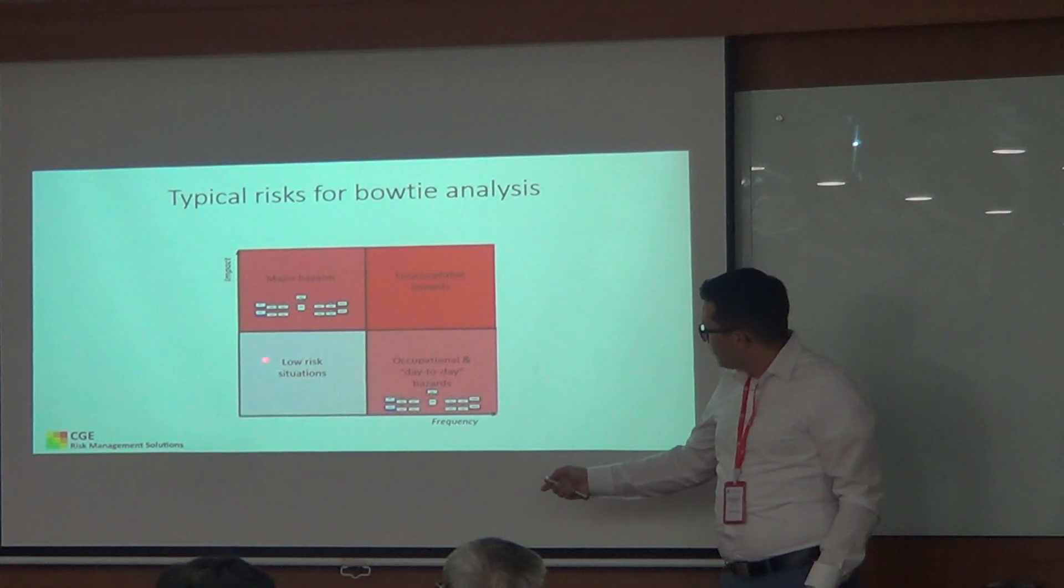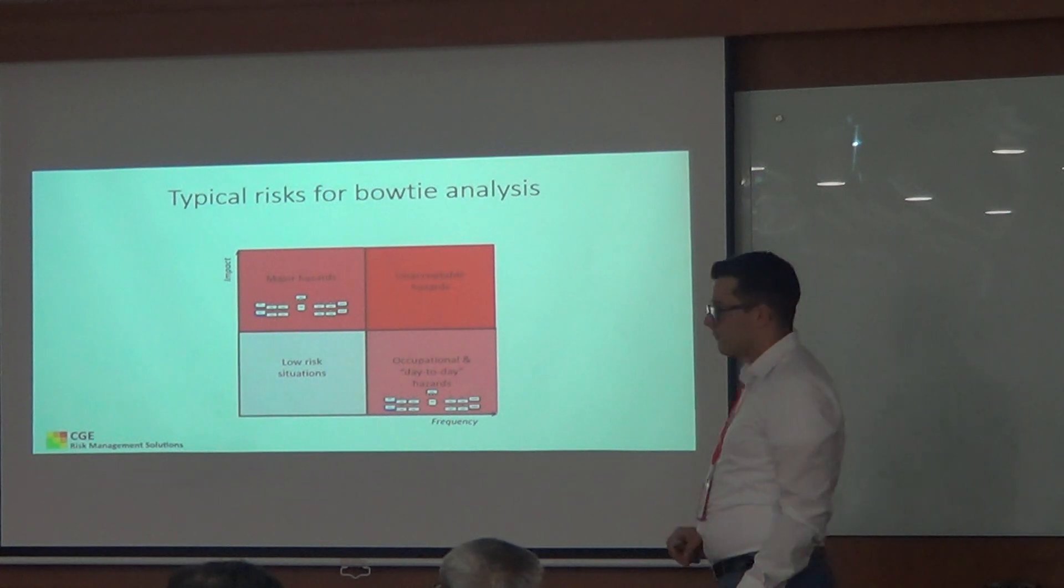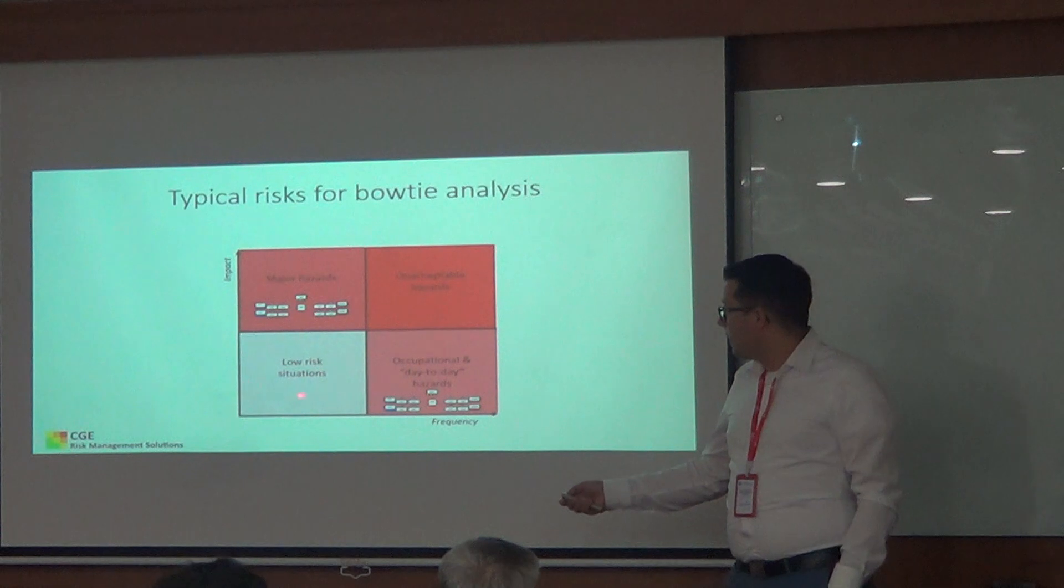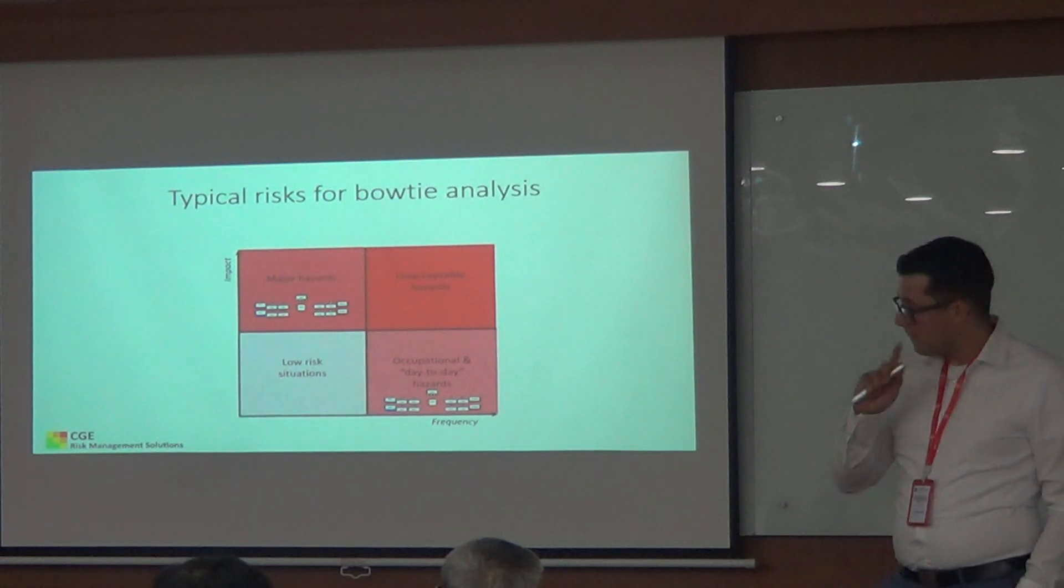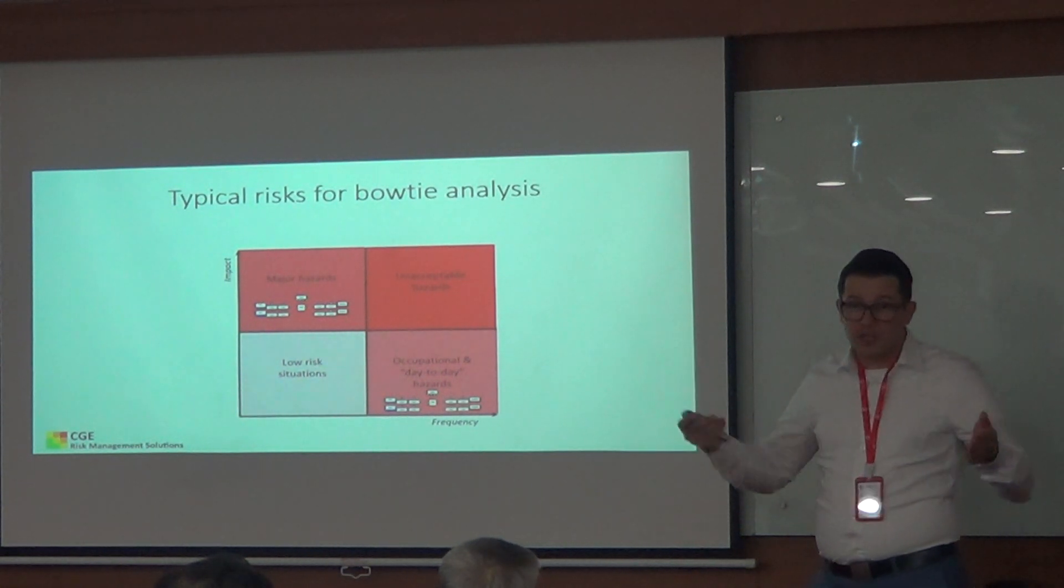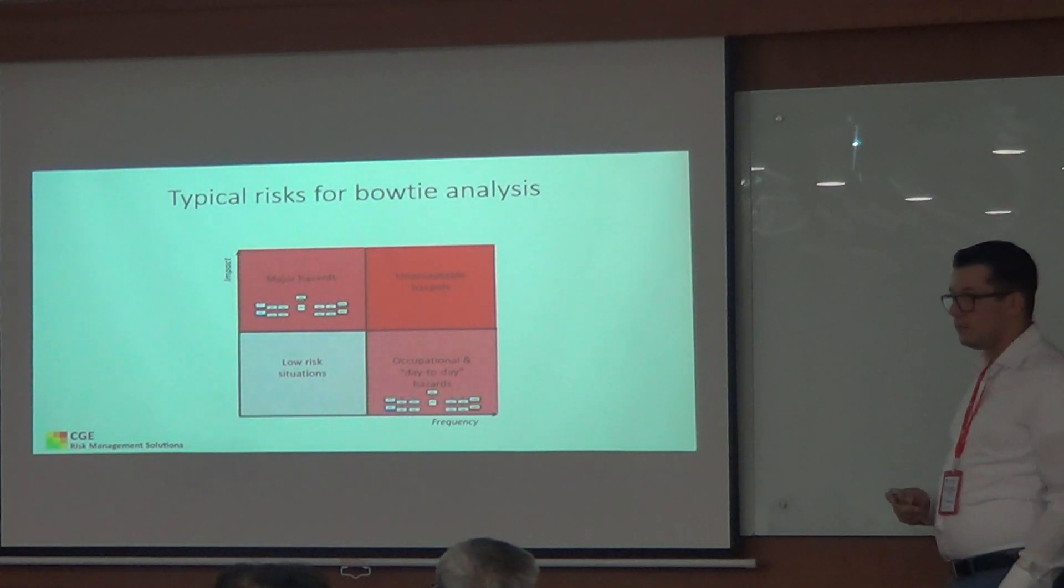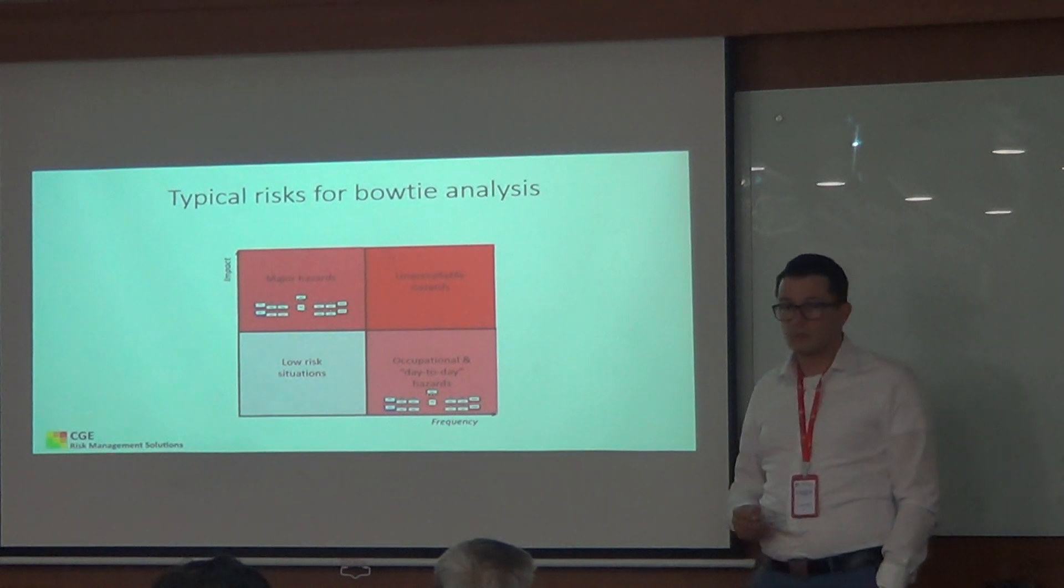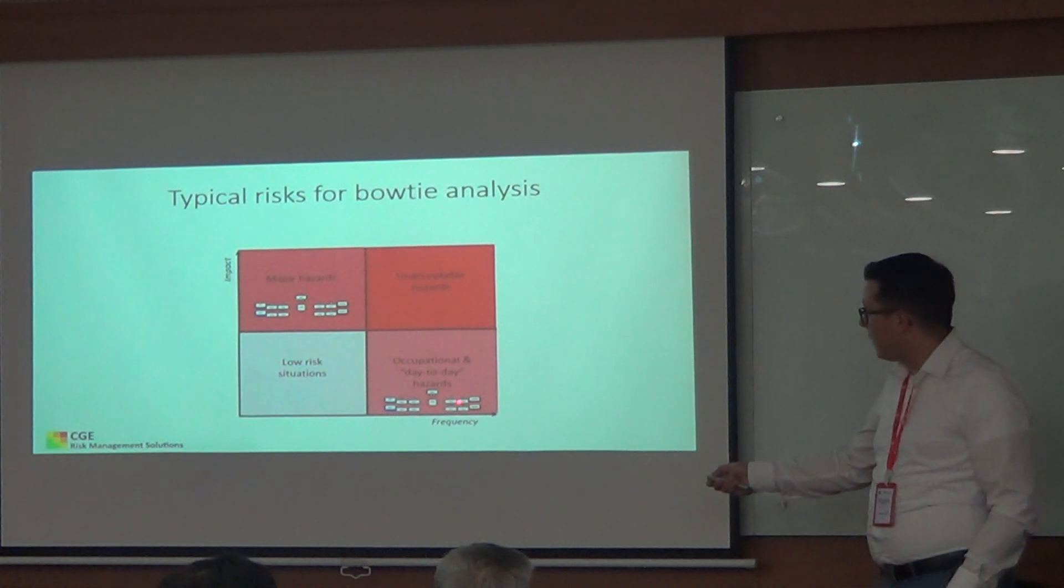So, on the other side, we have low risk, something which doesn't happen often and if it happens, isn't a large impact. We might consider this a waste of time to build bowties for this. So, two zones for which we want to build bowties are mainly things which are a large impact but don't happen that often, like an explosion. Or things which will happen very often. However, the impact will be limited. So, often occupational safety.